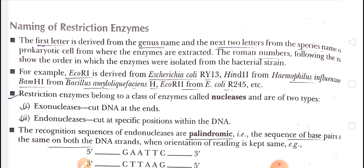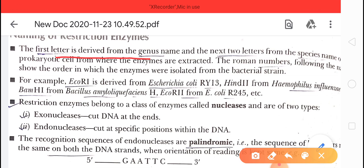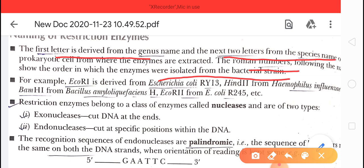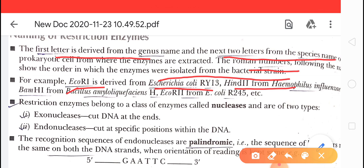The nomenclature of restriction enzymes: the first letter is obtained from the genus, the next two letters from the species, and the Roman numeral following the name shows the order in which the enzyme was isolated from the bacterial strain. For example, EcoRI is derived from Escherichia coli RY13; Hind II from Haemophilus influenzae; BamHI from Bacillus amyloliquefaciens.